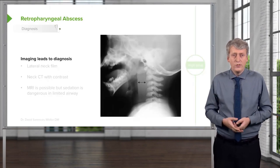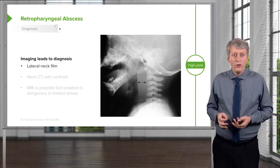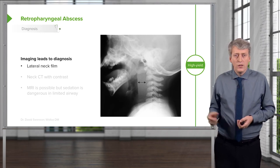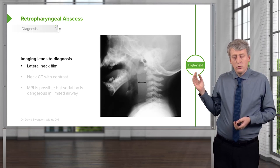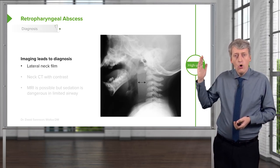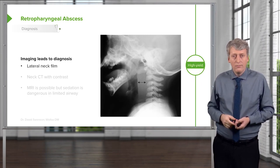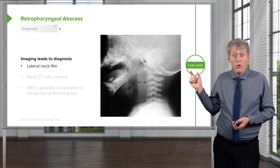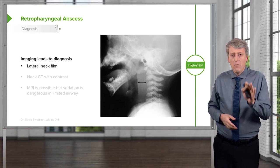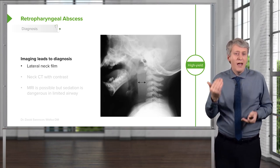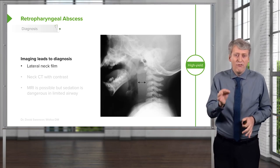Imaging is key for diagnosis. We'll get a lateral neck film. You can see a patient with a pretty impressive retropharyngeal abscess — the space between the cervical vertebrae and the open pharynx should be less than half the width of one vertebra. In this patient, it's more than the width of an entire vertebra. Keep in mind, if a patient is breathing out, you can have a false positive, so check with your radiologist that the film technique was good.